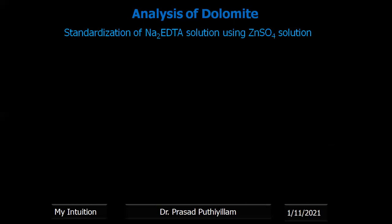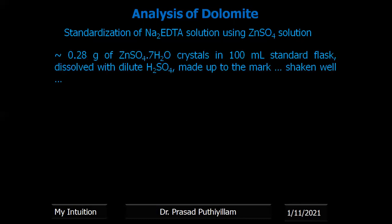Standardization. The procedure behind the estimation: standardization of the disodium salt of EDTA. The disodium salt of EDTA solution is prepared and standardized using zinc sulfate — zinc sulfate heptahydrate — solution. Approximately 0.28 grams of zinc sulfate heptahydrate crystals is dissolved in 100 cm³ standard flask with dilute sulfuric acid to avoid the water of hydration and made up to the mark, shaken well for uniform concentration.